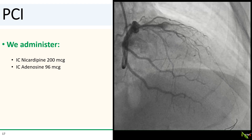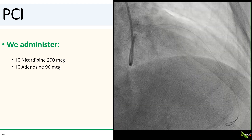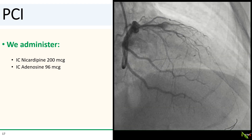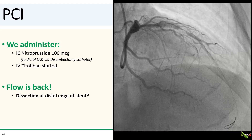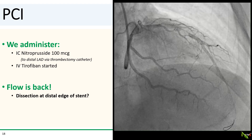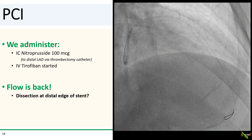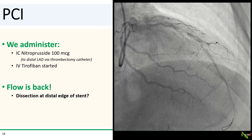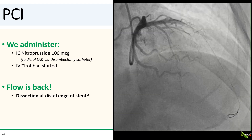Back to our patient. We decided to administer what we had on the table — we gave 200 micrograms of nicardipine and 96 micrograms of adenosine via our guide, but we still had no flow. We then advanced a thrombectomy catheter to the distal LAD and used it to administer 100 micrograms of nitroprusside, ensuring more of it reached the distal vascular bed. We also started tirofiban at this point. Finally, we did get flow back, and it looked like we may have a dissection at the distal edge of the stent — and maybe that's what caused the no reflow.